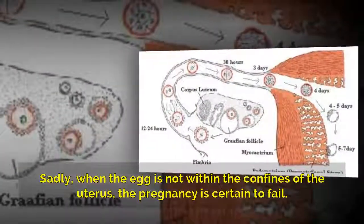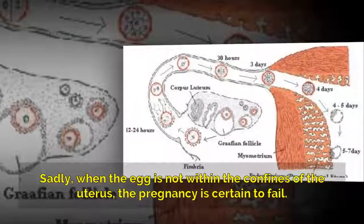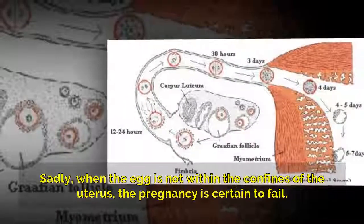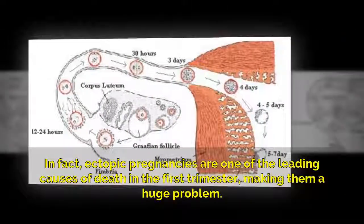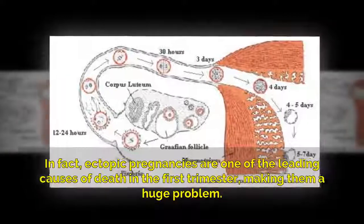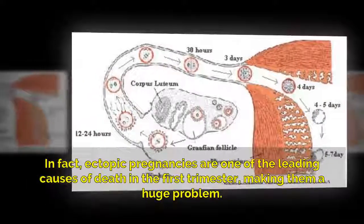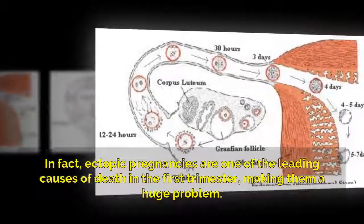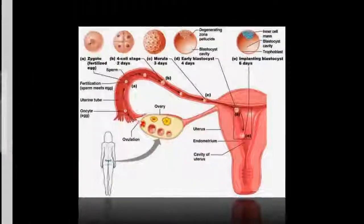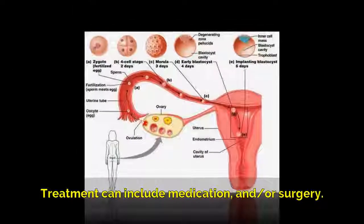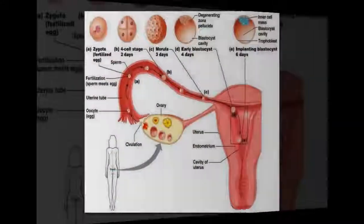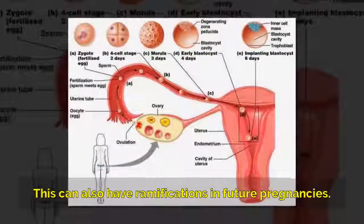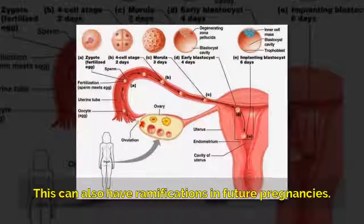Sadly, when the egg is not within the confines of the uterus, the pregnancy is certain to fail. In fact, ectopic pregnancies are one of the leading causes of death in the first trimester, making them a huge problem. Treatment can include medication and/or surgery. This can also have ramifications in future pregnancies.